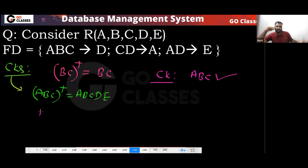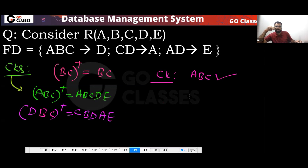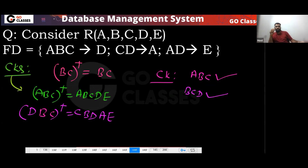Is there anything else? BC must be there. With D also you can check. So you will get BCD, and you can notice CD is determining A. Now you have BCD that can determine everything — so BCD is also a candidate key. Is there anything else? No, nothing else. So these two will be the candidate keys: ABC and BCD.